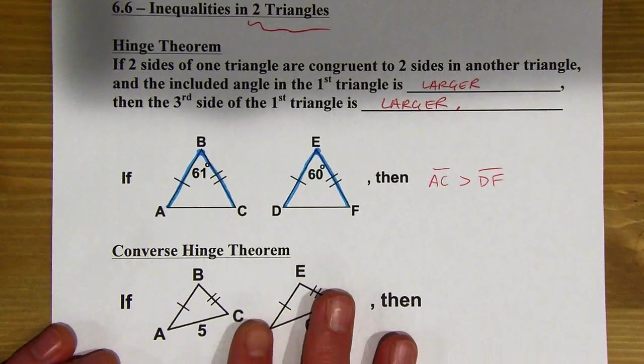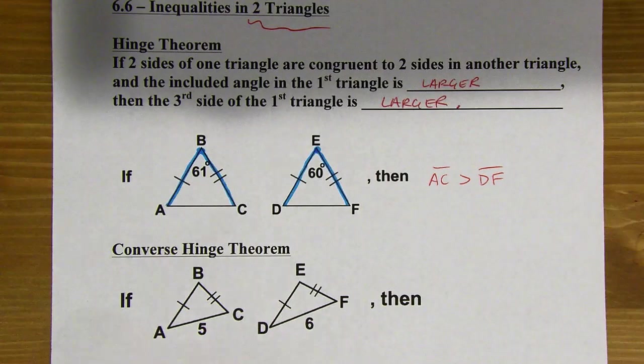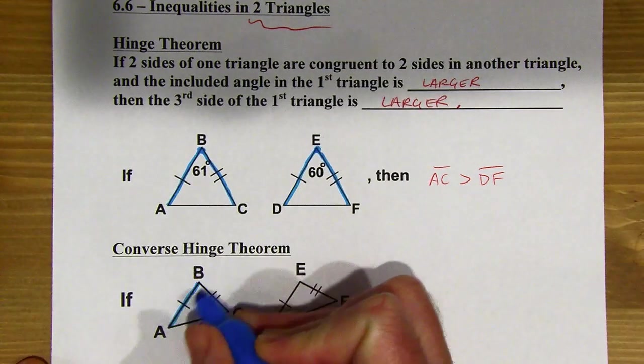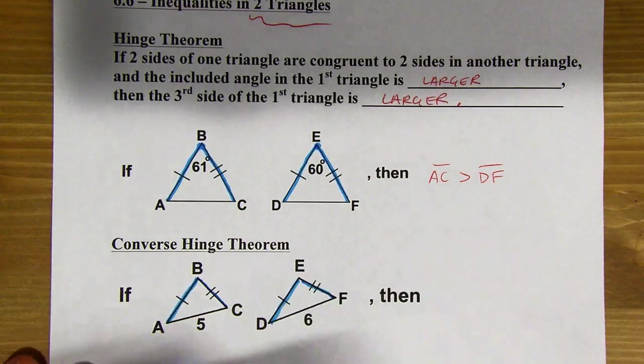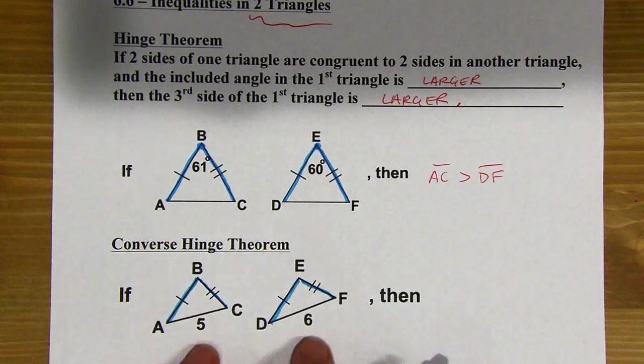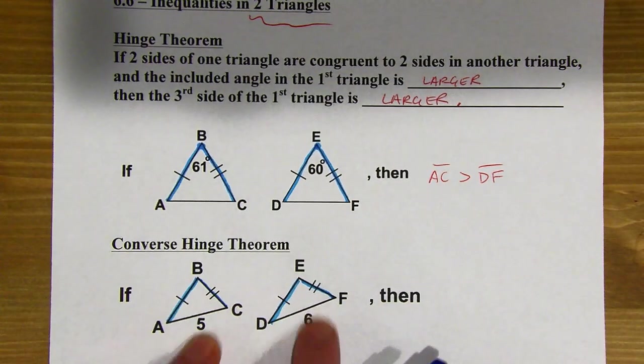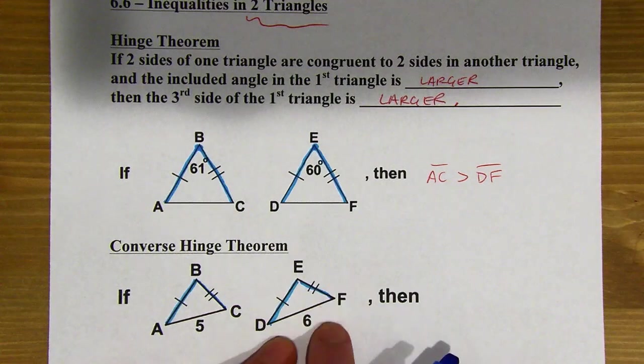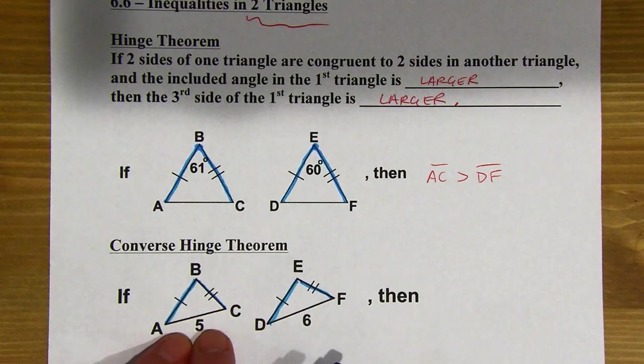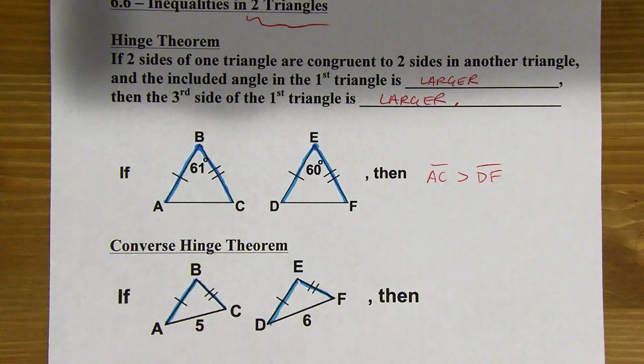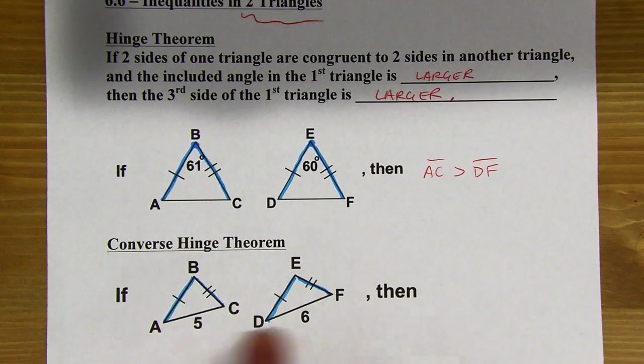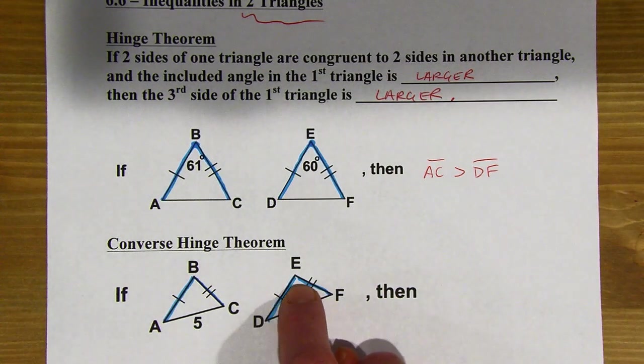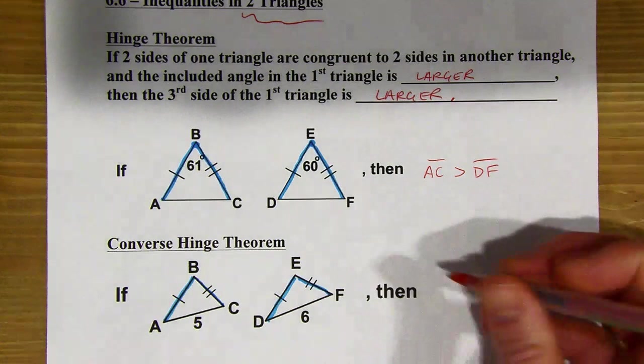And we can use this in reverse as well. So the converse of the hinge theorem, we've still got the same situation where we've got two pairs of congruent sides. And we can tell which of these doors is open wider. We don't know the angles, but we can see, oh, that's accommodating for a 6. This one's just accommodating for a 5. So that means this one must be open wider, right? Since 6 is greater than 5, that means angle E, the measure of angle E, is going to be greater than the measure of angle B.